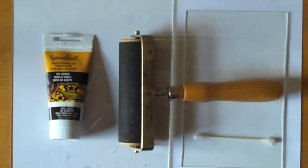To make a monoprint, we'll use oil-based ink, a brayer, plexiglass, a q-tip, and some paper towels.